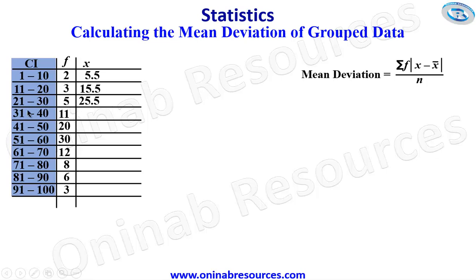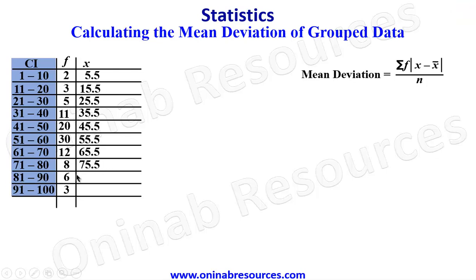Continuing: 31 plus 40 divided by 2 gives 35.5; 41 plus 50 divided by 2 gives 45.5; 51 plus 60 divided by 2 gives 55.5; 61 plus 70 divided by 2 gives 65.5; 71 plus 80 divided by 2 gives 75.5; 81 plus 90 divided by 2 gives 85.5; 91 plus 100 divided by 2 gives 95.5. We've now gotten all the mid values x for the class intervals.